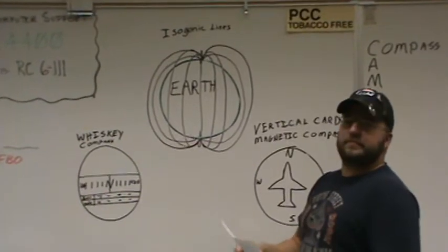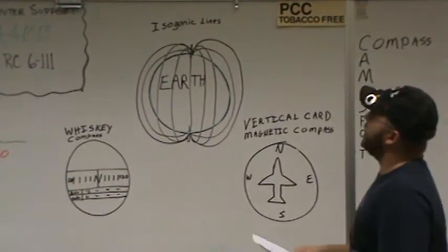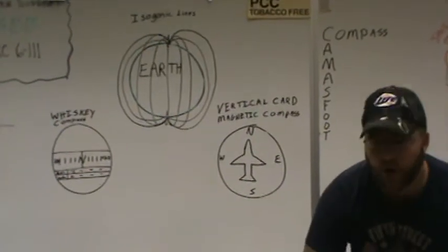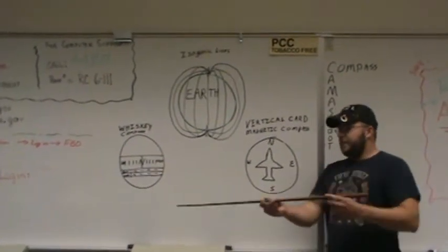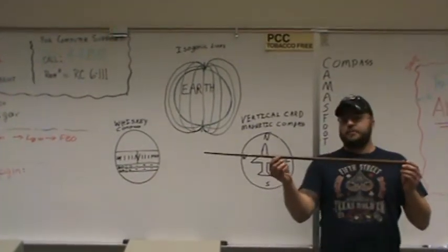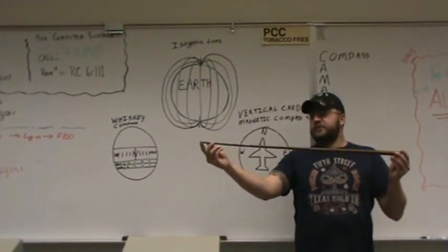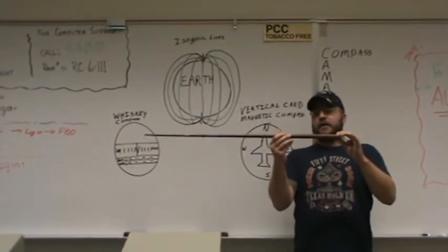So what we do to compensate for that is there is a small weight on the south side of your compass. So if you can imagine that this is your compass needle, this is sinking north, there would be a small weight here.